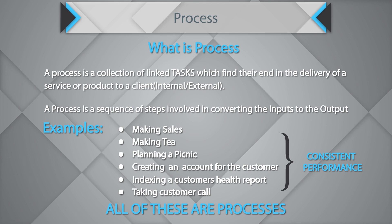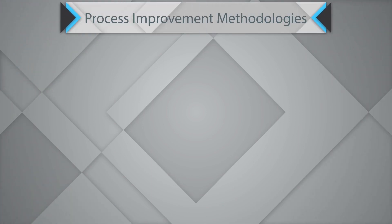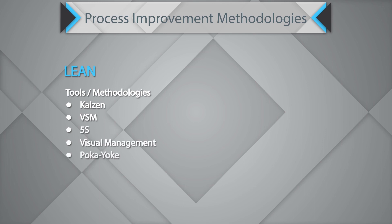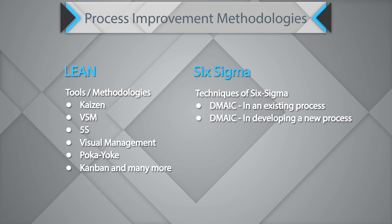Now let's look at some process improvement methodologies. The first is Lean, which has tools and methodologies like Kaizen, Value Stream Map (VSM), 5S, Visual Management, Poka-Yoke, and Kanban, among many more. The second methodology is Six Sigma, which has defined techniques like DMAIC and DMADV. DMAIC is used for an existing process, and DMADV is used when developing a new process. We shall discuss all of these in the later part of this video.